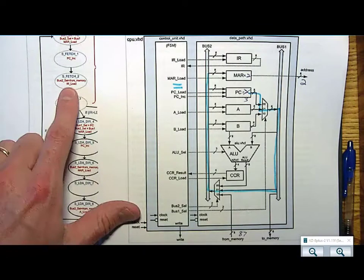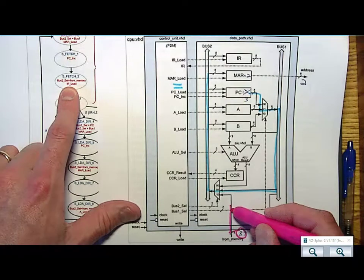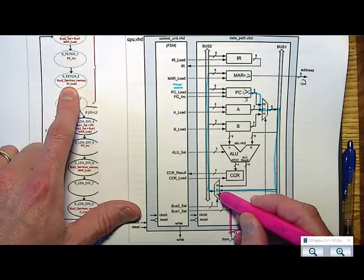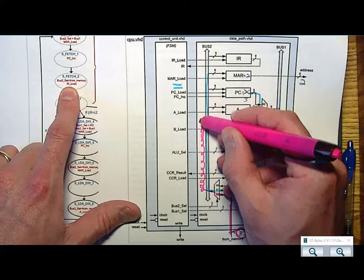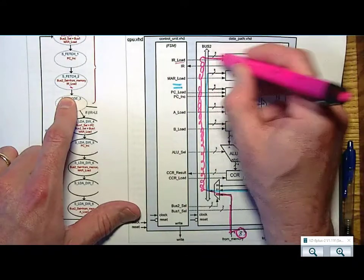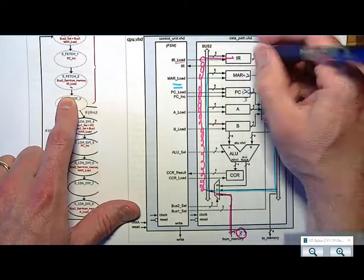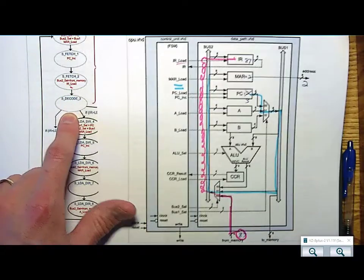So what do I want to do with an opcode? I want to bring it into the data path. I want to choose to have it drive bus 2 by changing the bus 2 select lines, and then I want to do an IR load. The IR load is what puts it into the instruction register.